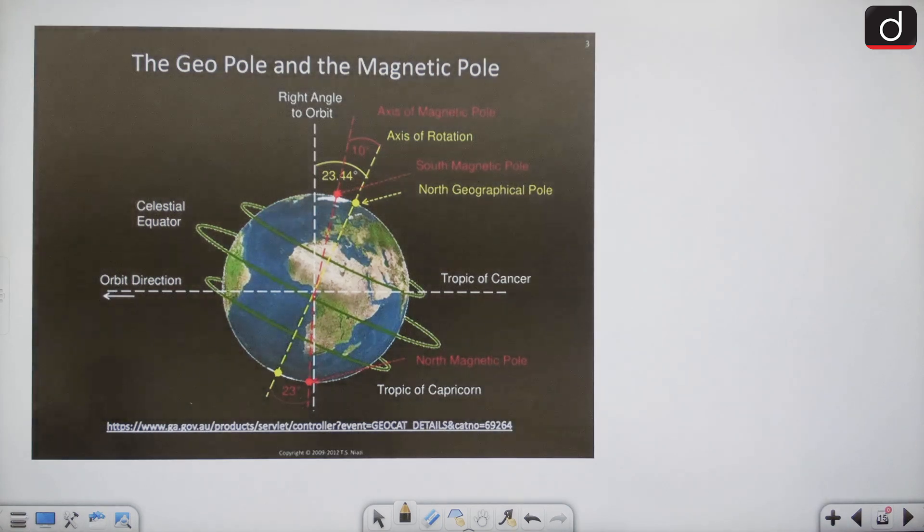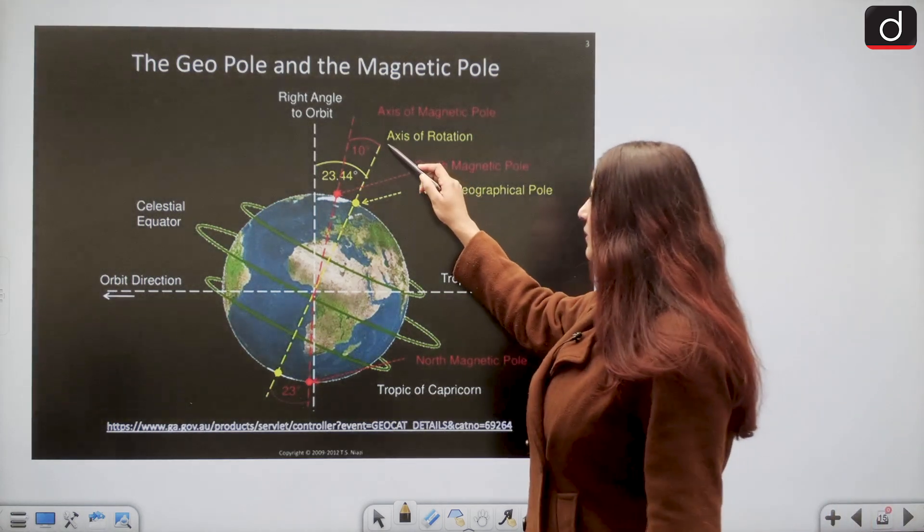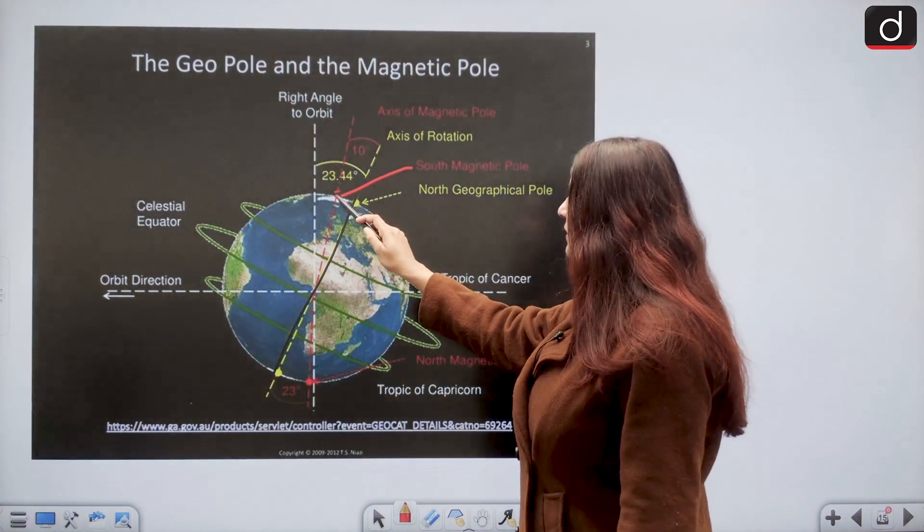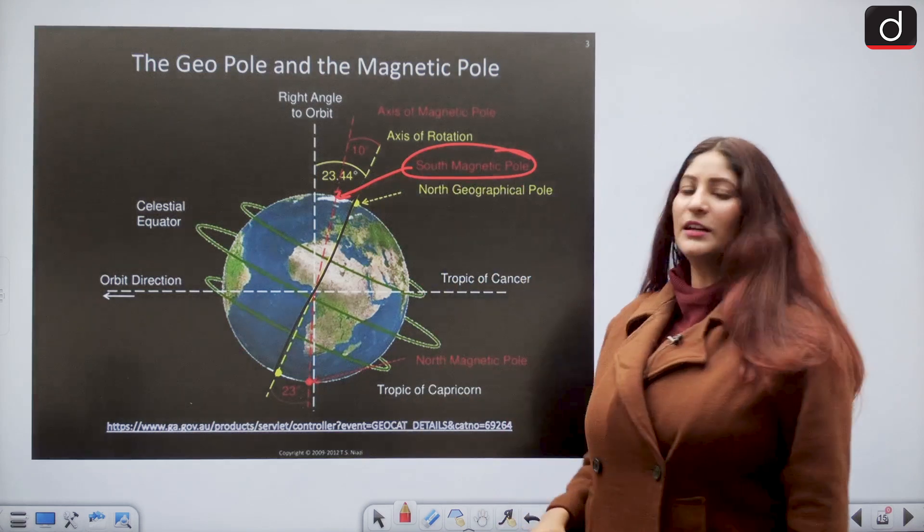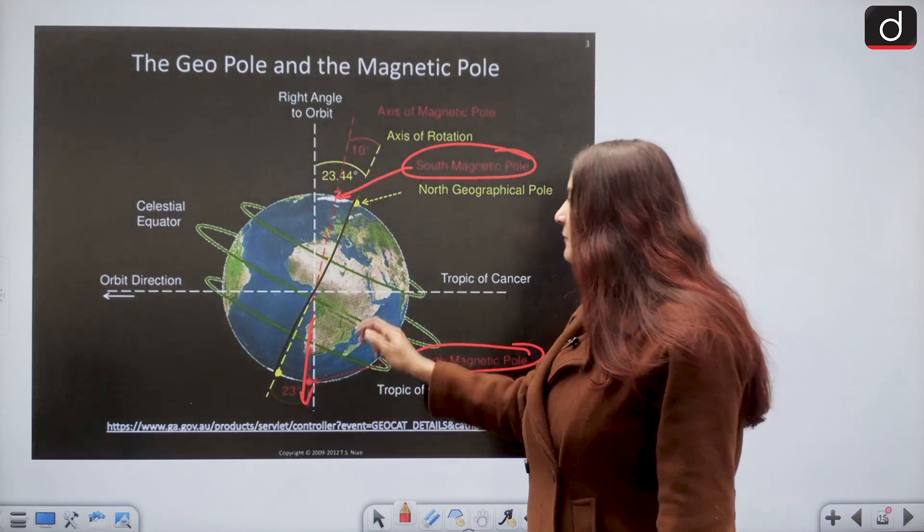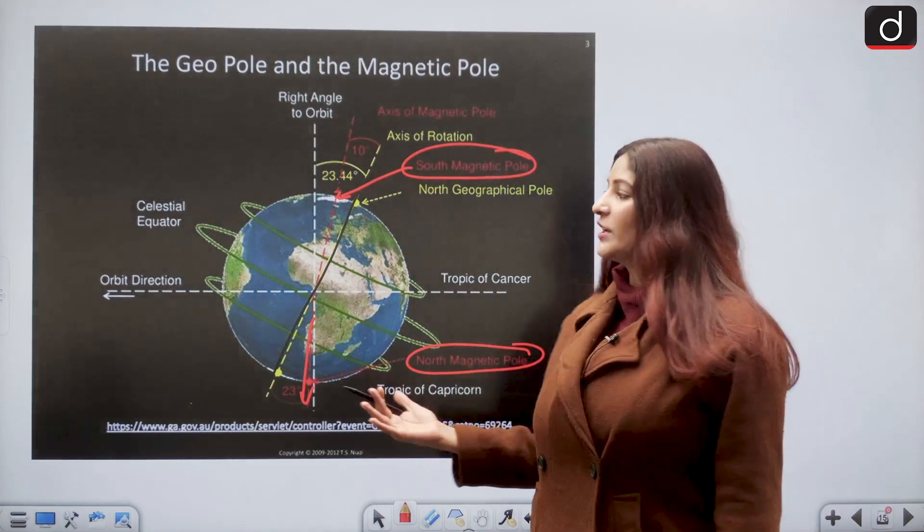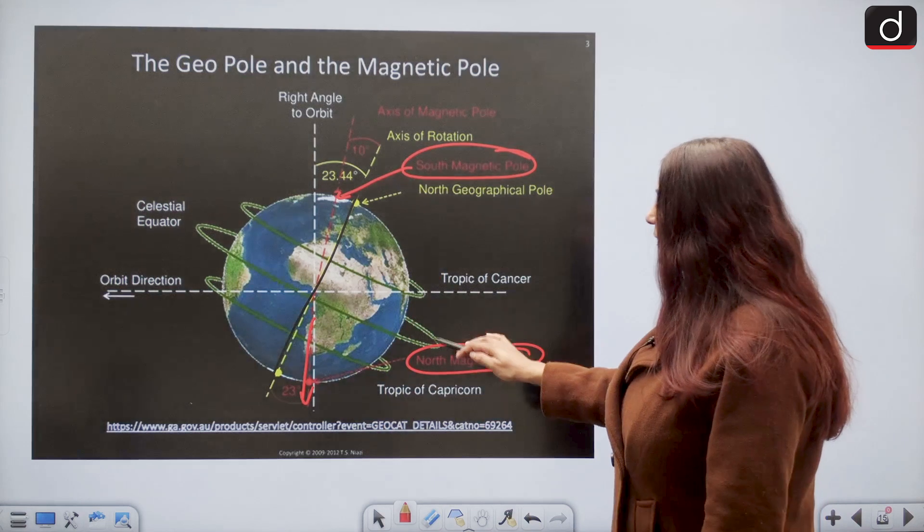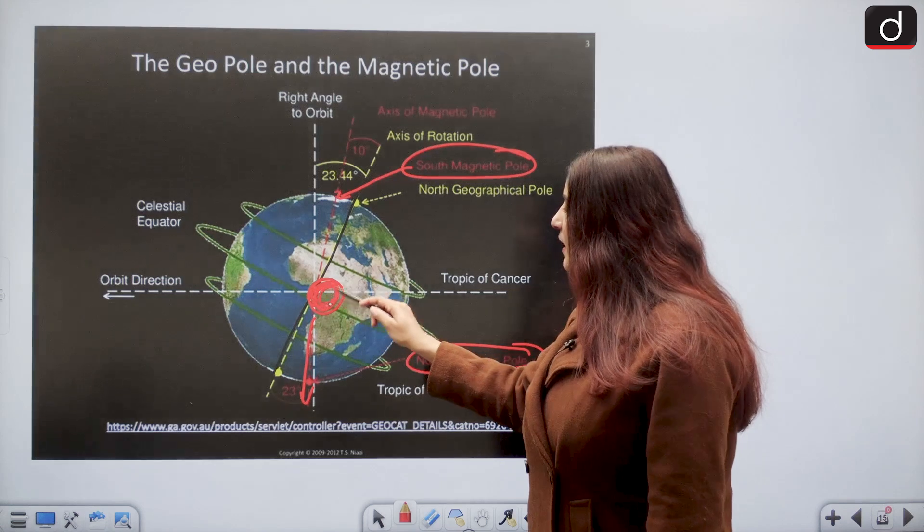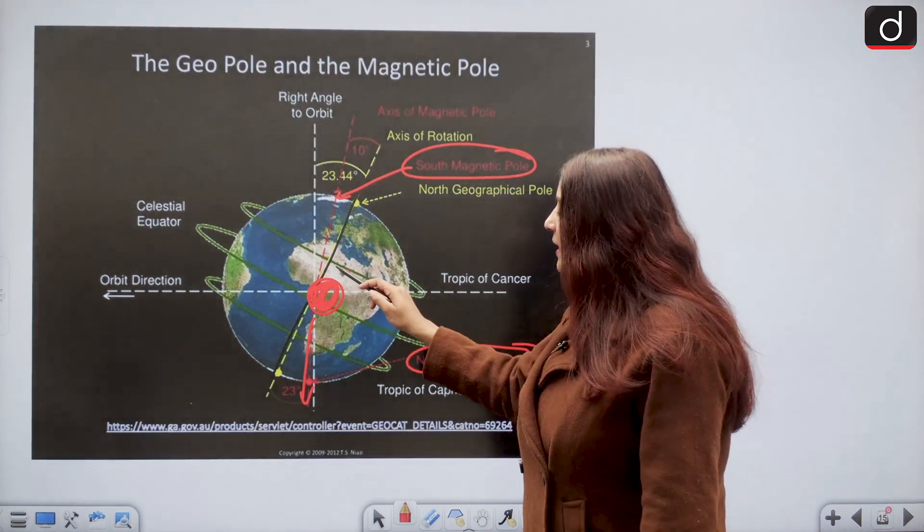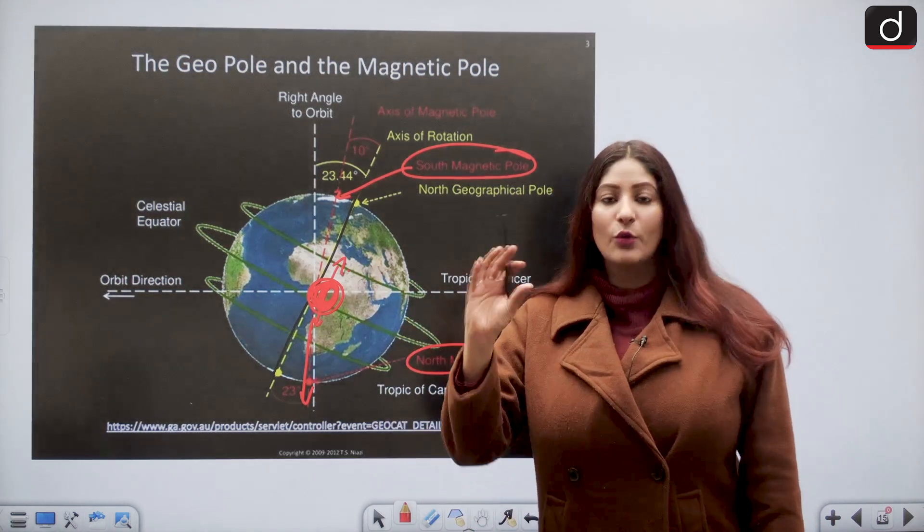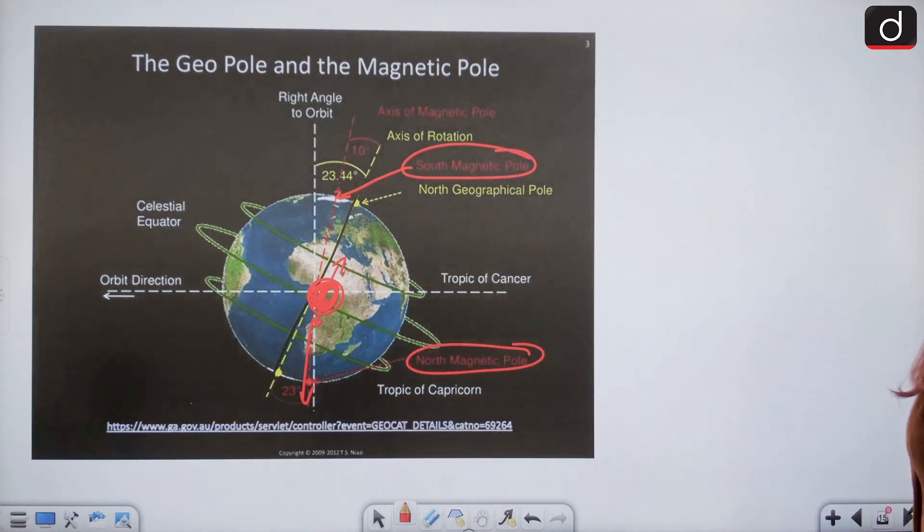As you can see, this is the axis of rotation of the earth, and this is the south magnetic pole of the earth, then we have the north magnetic pole over here. It is different if we compare it to the axis of actual rotation. The core has its iron crystals aligned in the north-south pattern and because of this the rotation also differs.